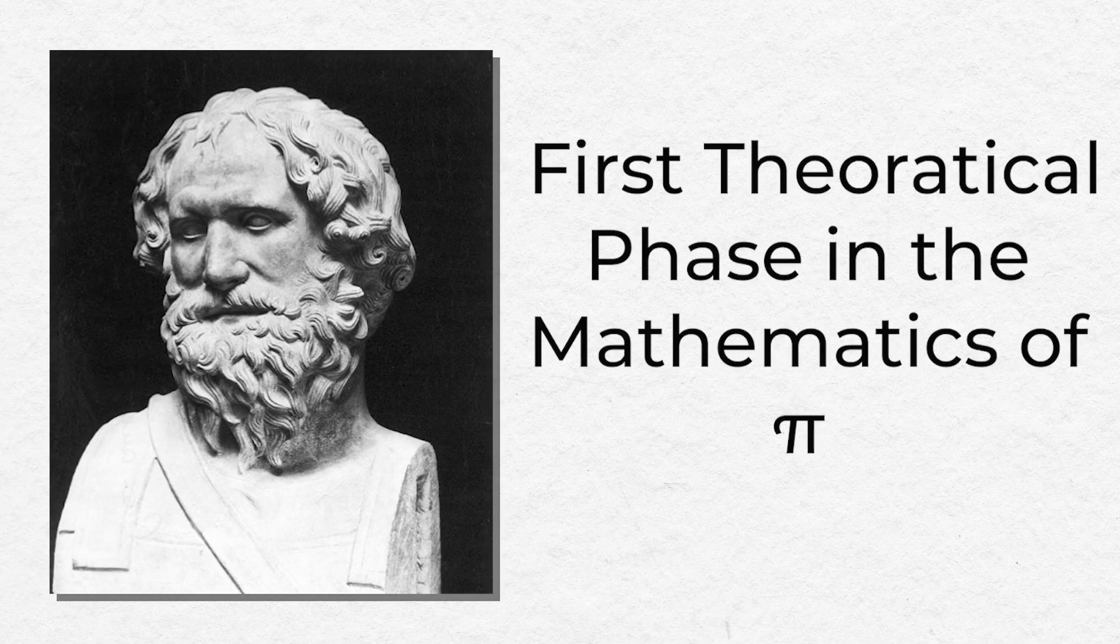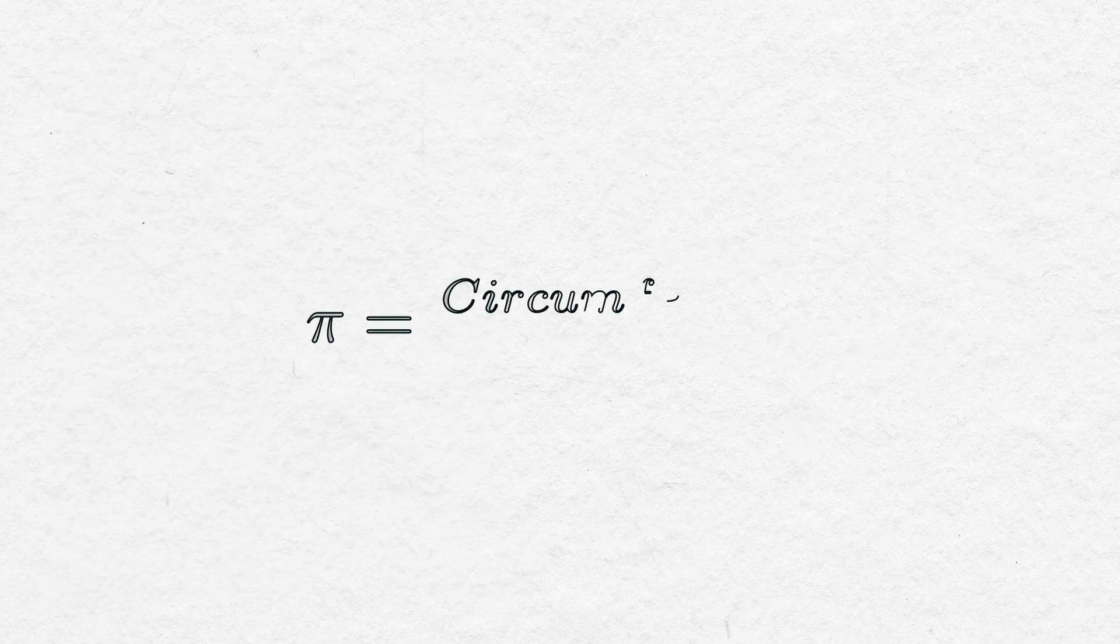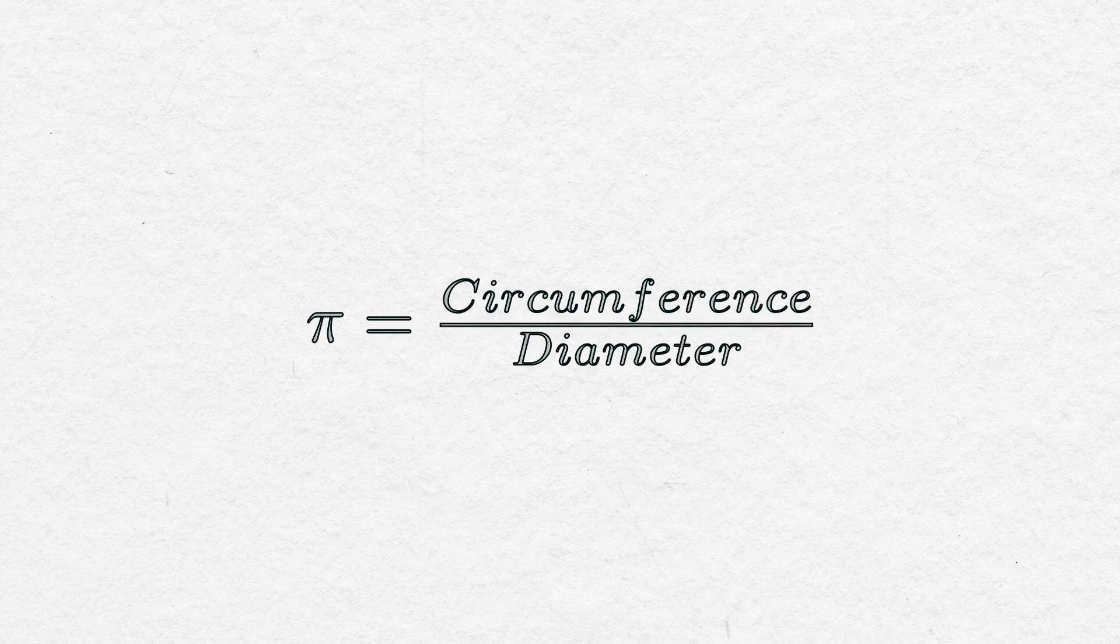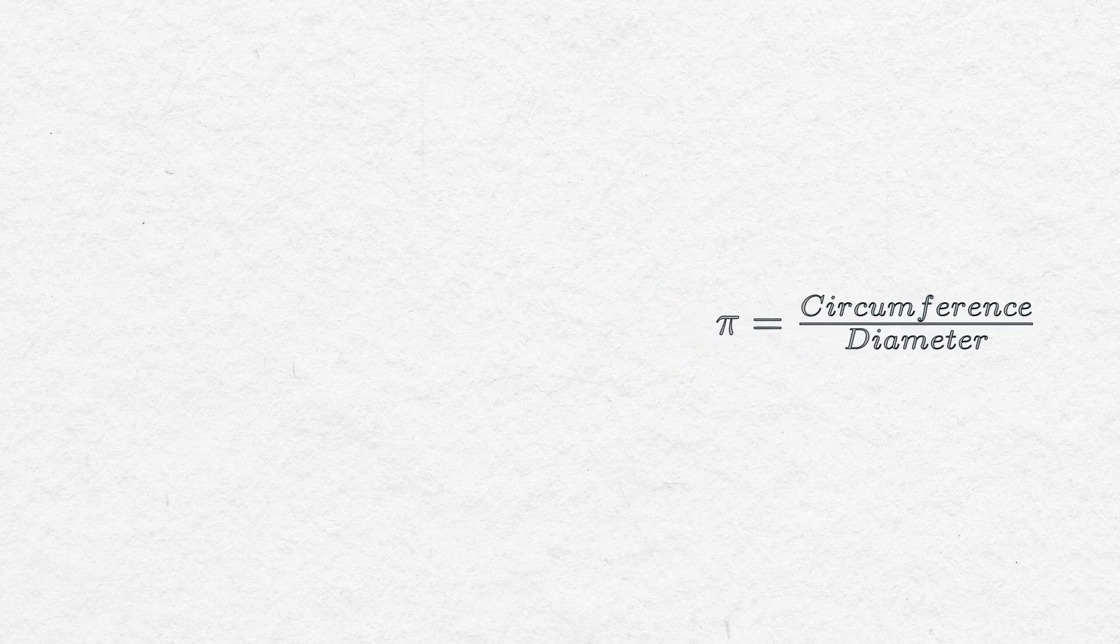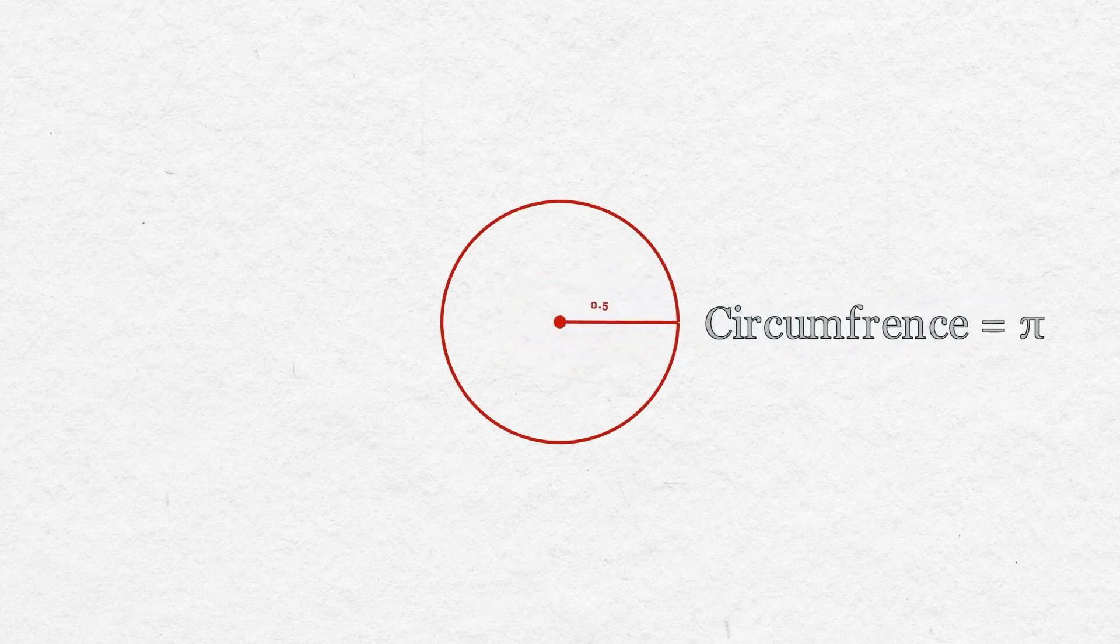Then came Archimedes, who started the first theoretical phase in the mathematics of pi. During his time, they already knew that pi is defined as the ratio of a circle's circumference to its diameter. Using this knowledge, he made a circle with a unit diameter, which made circumference equal to pi.